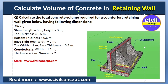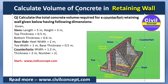At the corner — at the edge of the stem and heel — there is a counterfort, so this is known as a counterfort retaining wall. In this video we will see how to calculate the volume of this type of retaining wall. The given dimensions are: stem length is 5 meters, height is 3 meters, top thickness is 0.5 meters, and number of counterforts is 2.